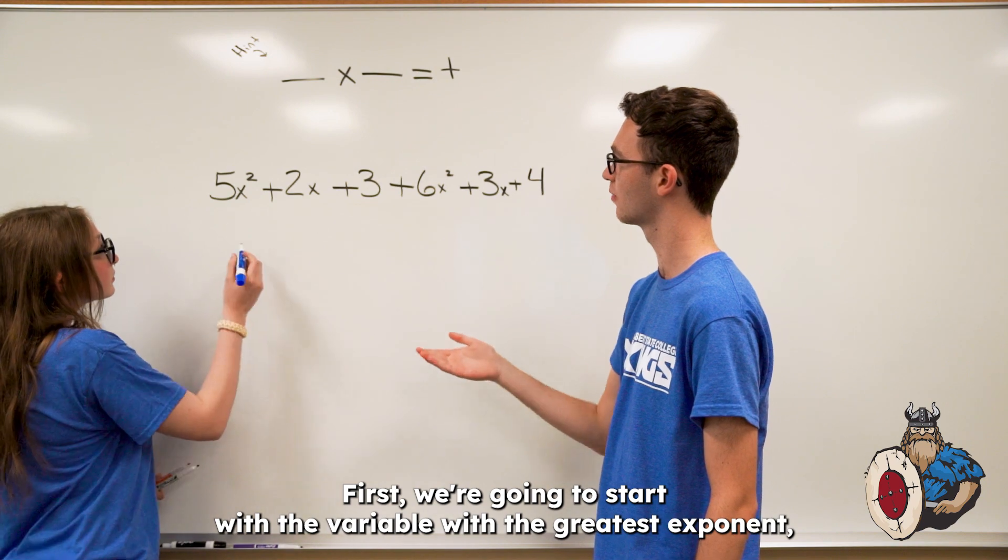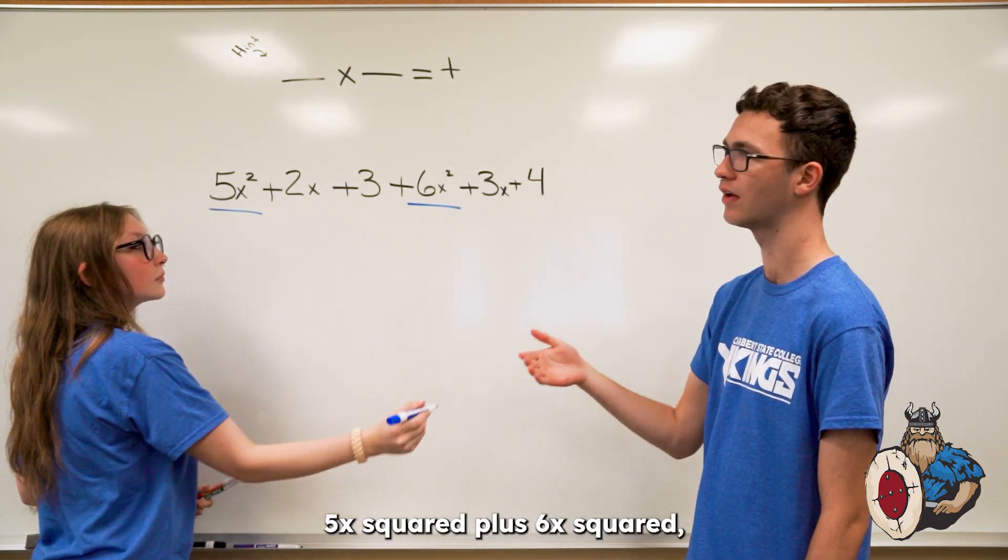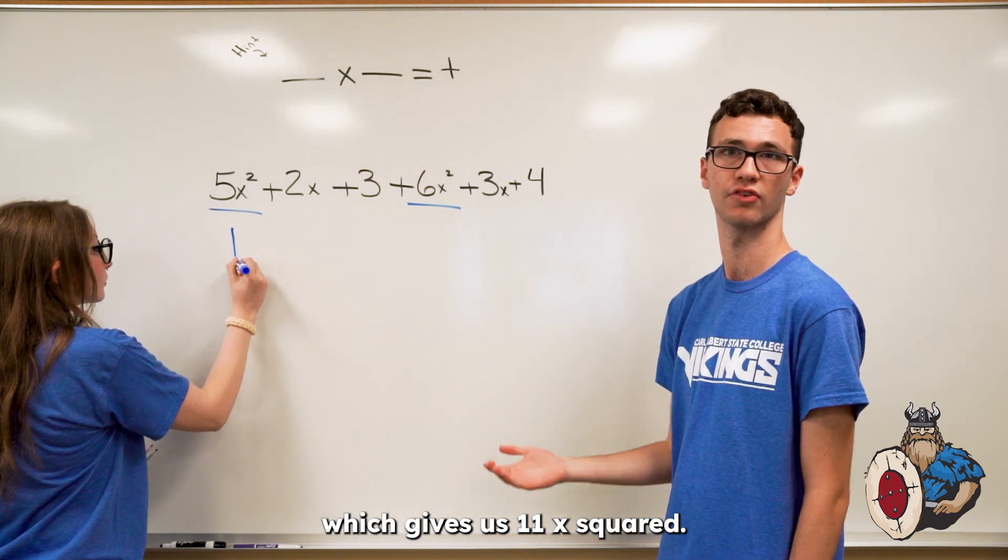First, we're going to start with the variable with the highest exponent, which is x squared. 5x squared plus 6x squared, which gives us 11x squared.